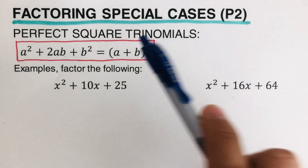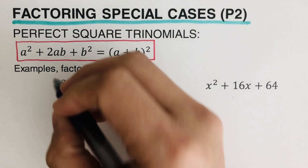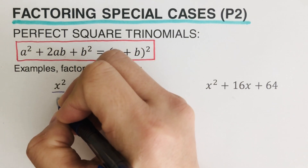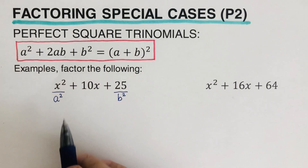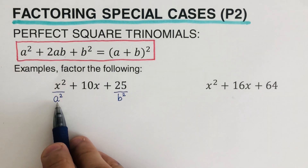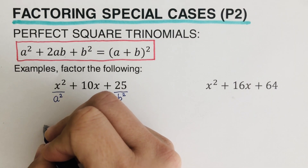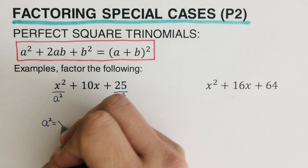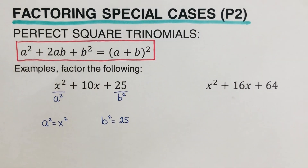Let's have an example to better see how to use this formula in the red box. The first step is to label the a-squared and b-squared terms in the expression. This term is our a-squared and this one is our b-squared. We need to find a and b, so we set a-squared equal to x-squared and b-squared equal to 25.